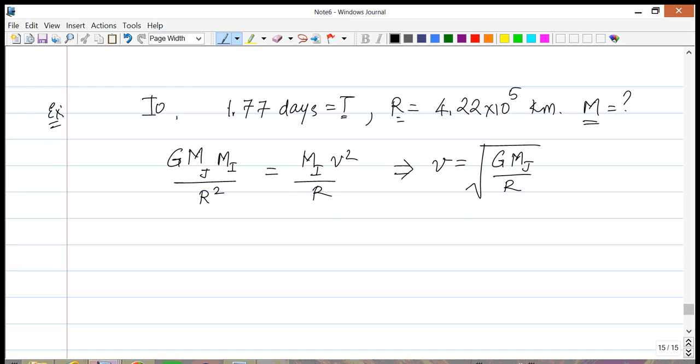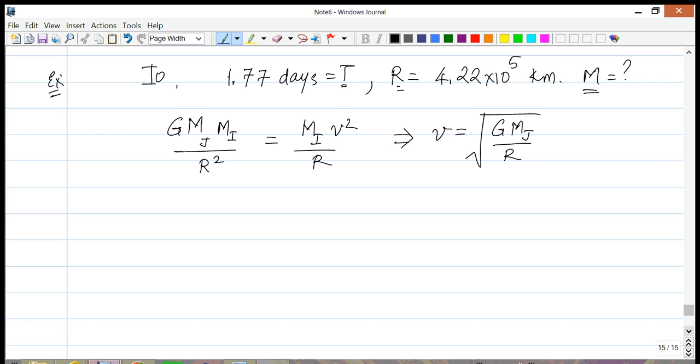Great. We do not know M_J, we do not know R, so we can't really do anything yet. But let us relate V to the time period. Now this relationship is independent of whether it's a satellite or whether it's something else. If something's moving uniformly around a circle, the speed is given by 2πR divided by the time period.